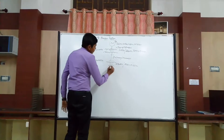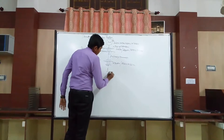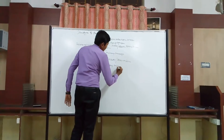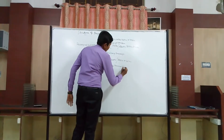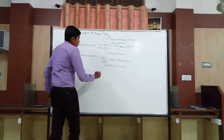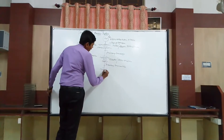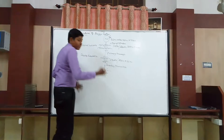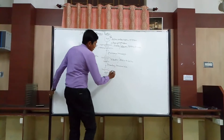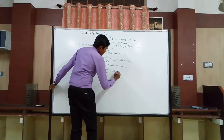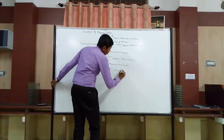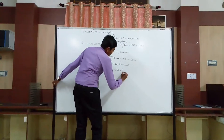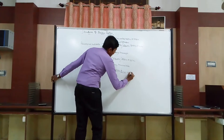Next to this, we are having another transmission that is called secondary transmission. In the secondary transmission, we are having a step-down transformer. In this transformer, we are stepping down the voltage from 33 KV to 6.6 KV or 11 KV.